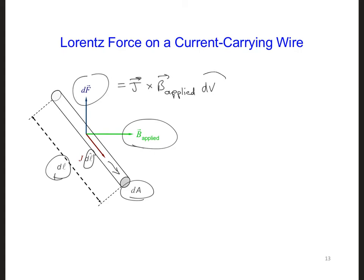We can calculate this to be j crossed with b applied dV. Now, we can expand dV to be dA times dL, and we can also write j as j times dL hat, giving it a direction. Then, if we move the dA and dL terms over next to j, we'll have j dA dL hat crossed with b applied. Well, then we have j times dA, and that gives us i, and I can turn dL hat into a vector dL crossed with b applied.